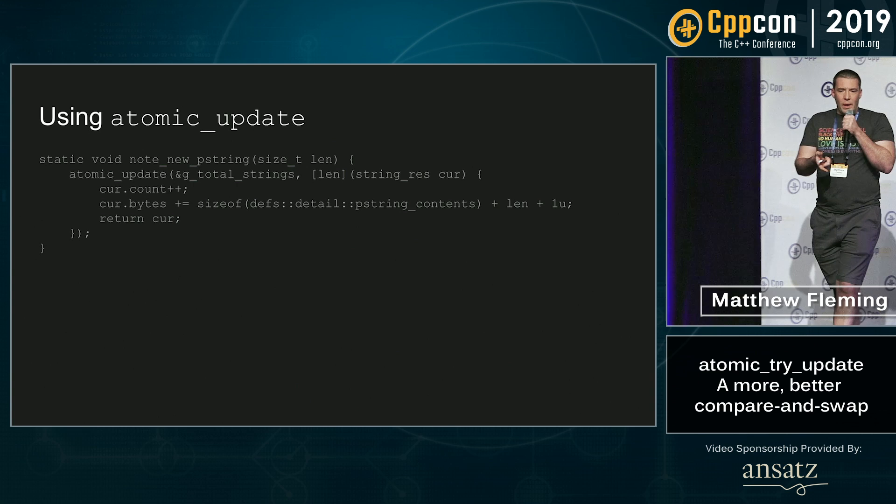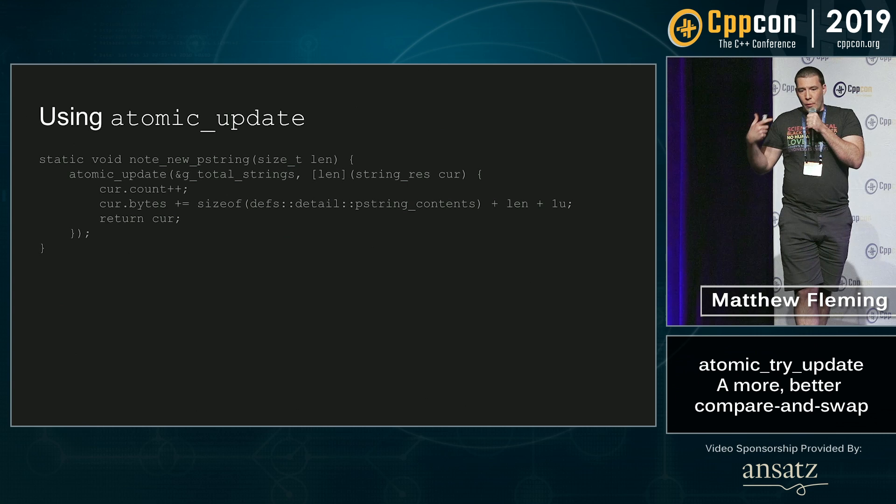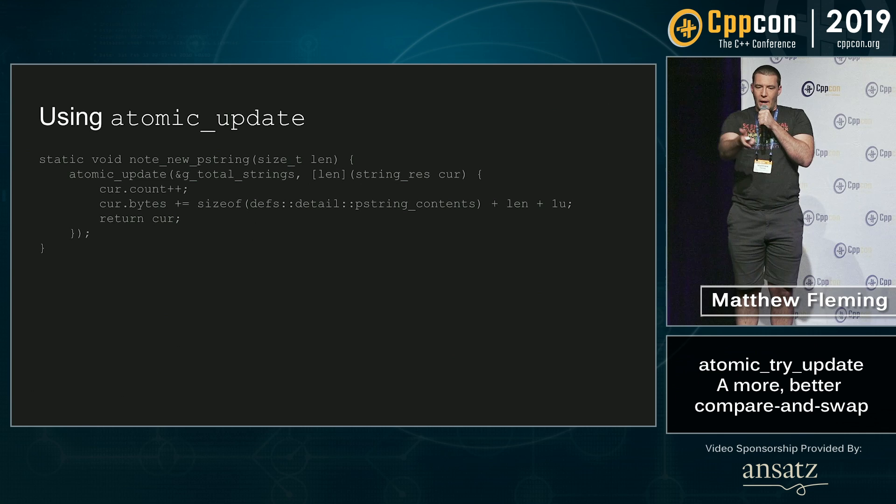Here's how I would use it. For example, I've got an internal string type and I want to remember how many strings I have and how much memory they're taking up so I can report on this regularly. So every time I make a new string, I will note that there is exactly one more string and it takes up this much size. Instead of having to do the mechanics of that do-while loop myself, I just put it in the lambda. You gave me the old value, I updated it and said here's the new one — you go figure out how to make this happen atomically.